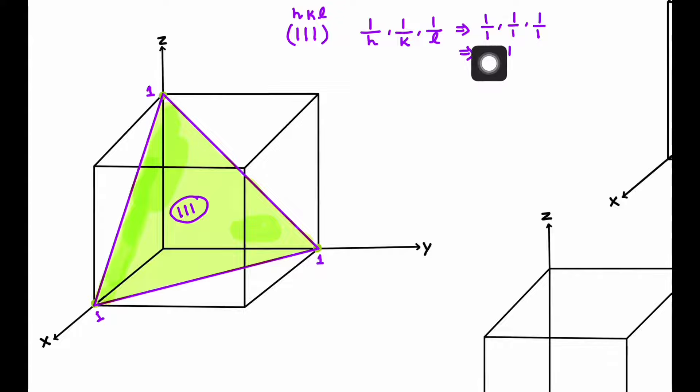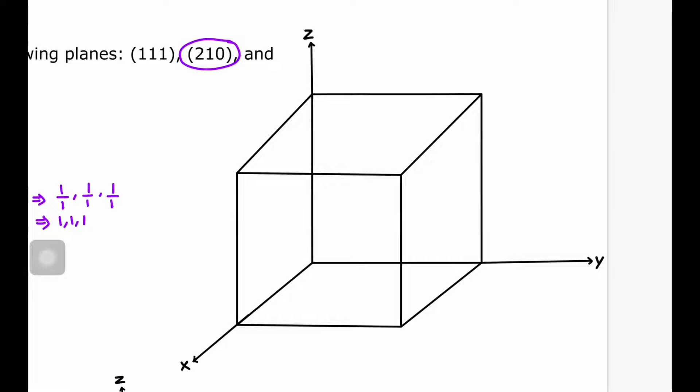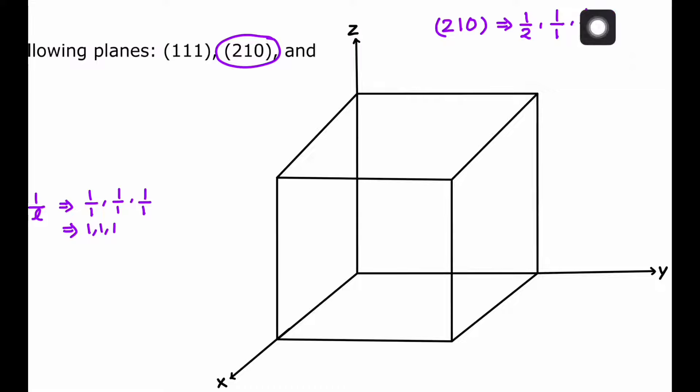Now let's see the next plane, which is the 210 plane. The Miller indices are 2, 1, 0. We take the reciprocal to get the point of intersection at the X, Y, and Z axes. So it will be 1/2, 1/1, and 1/0 — that is infinity. This means this plane will not be intersecting the Z axis.